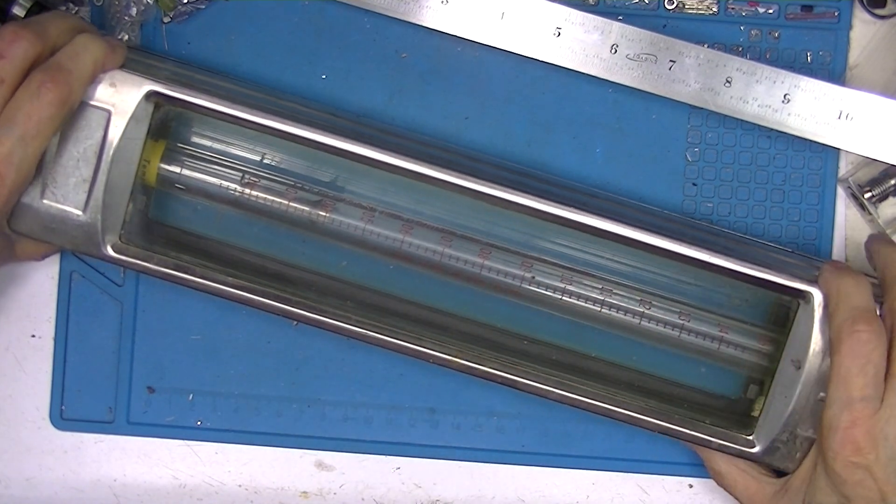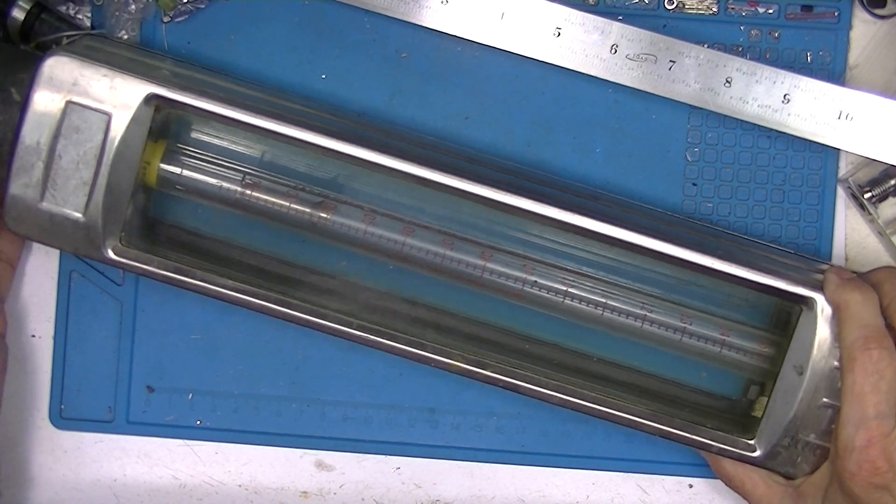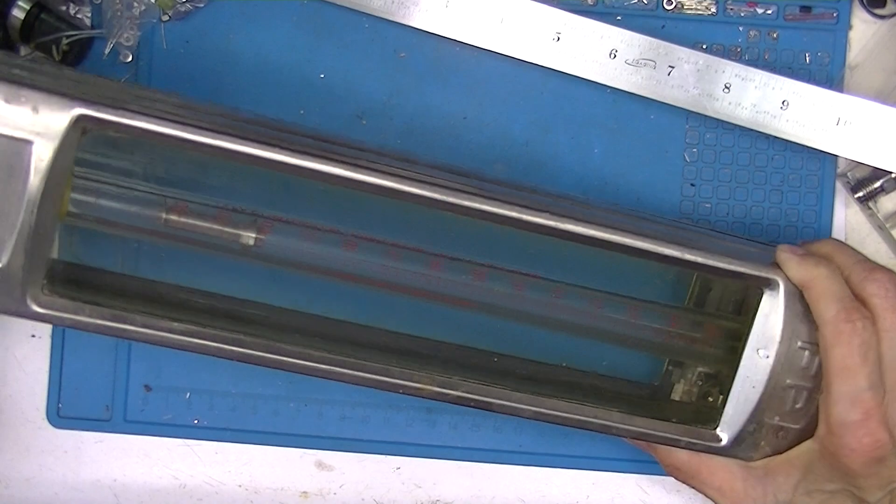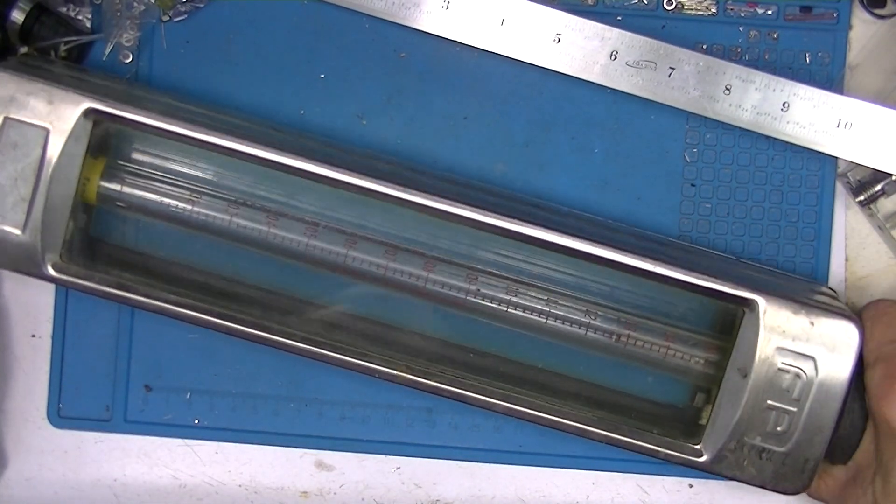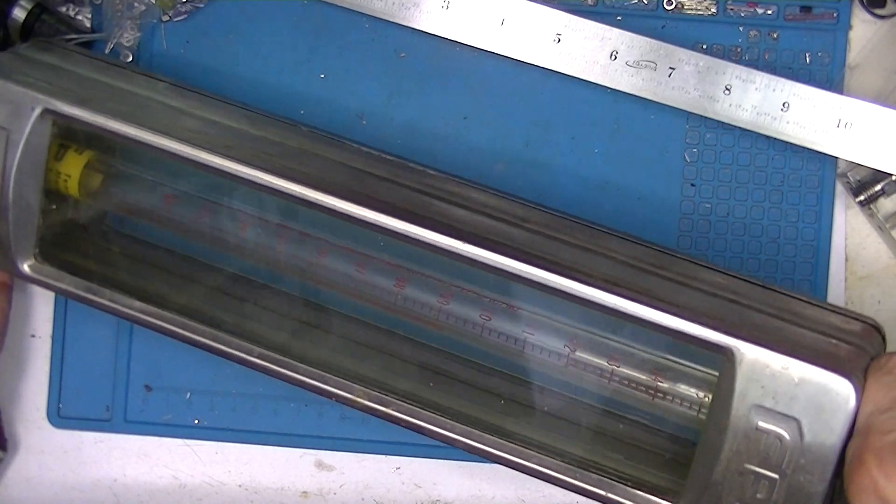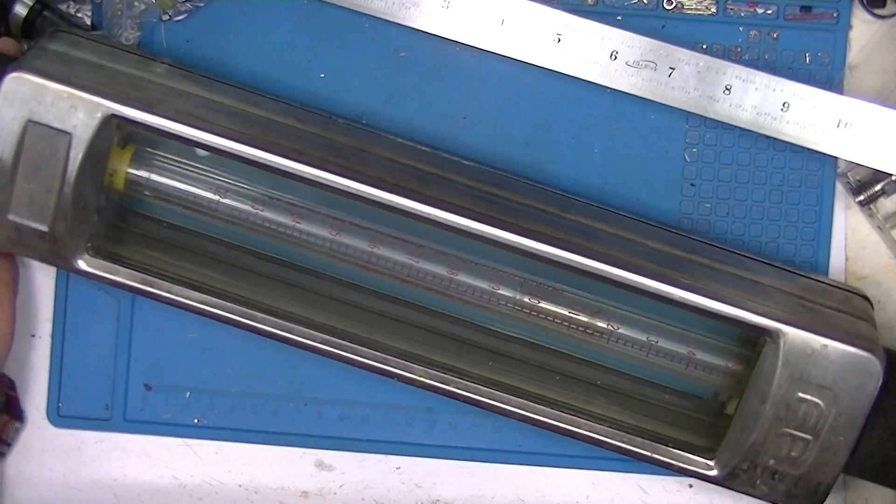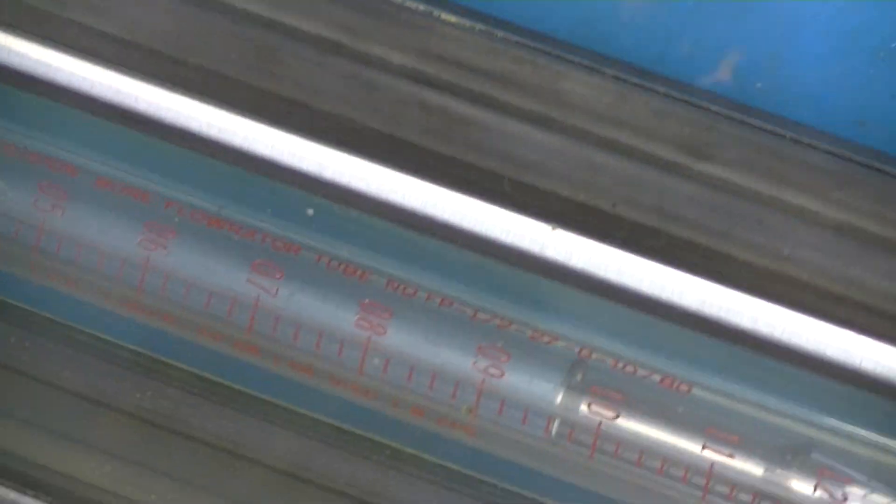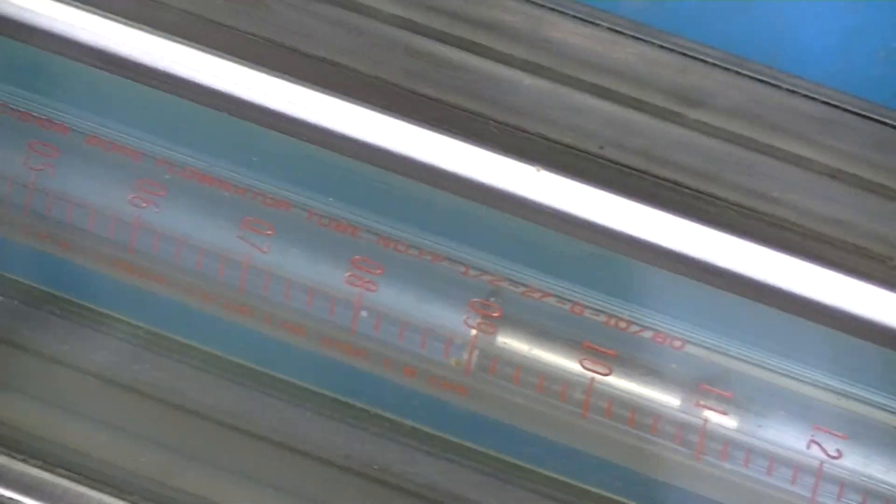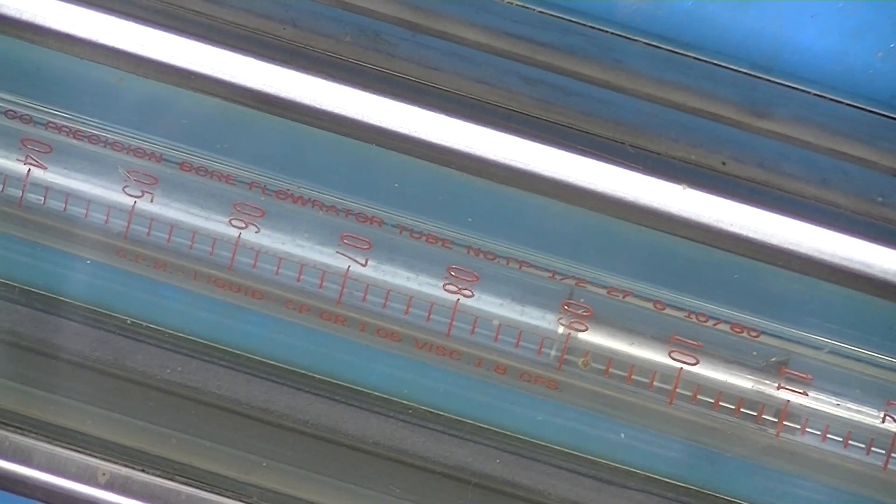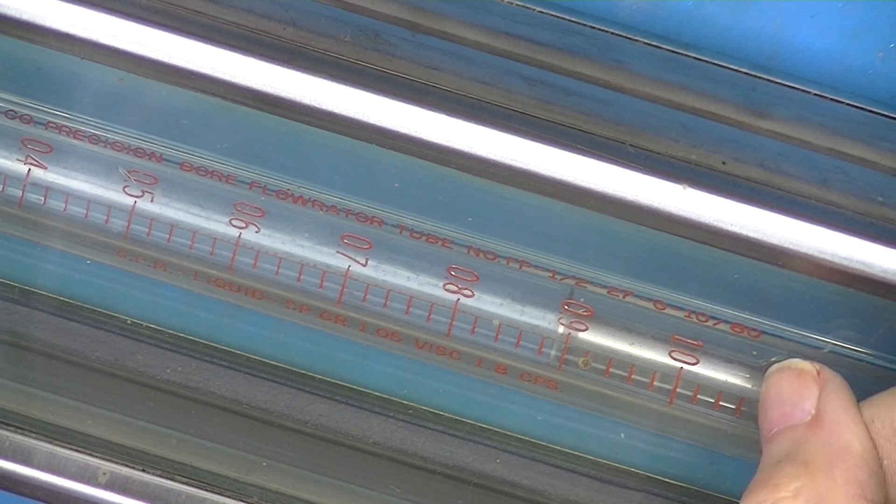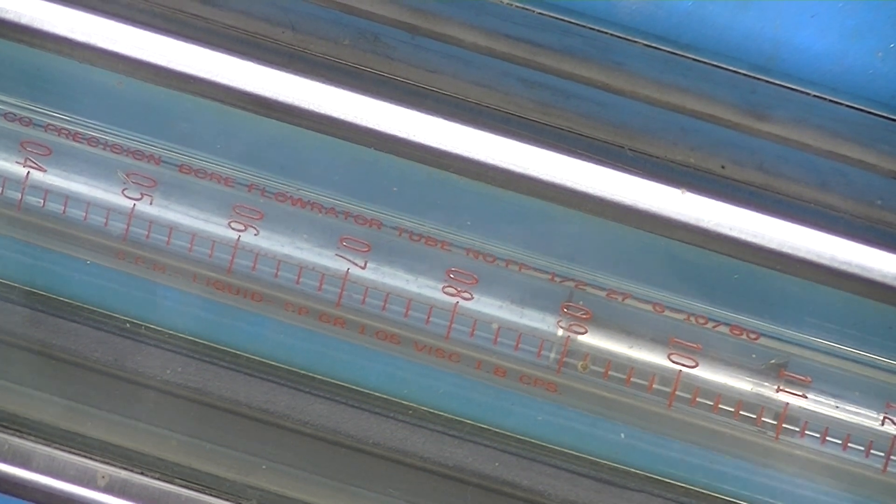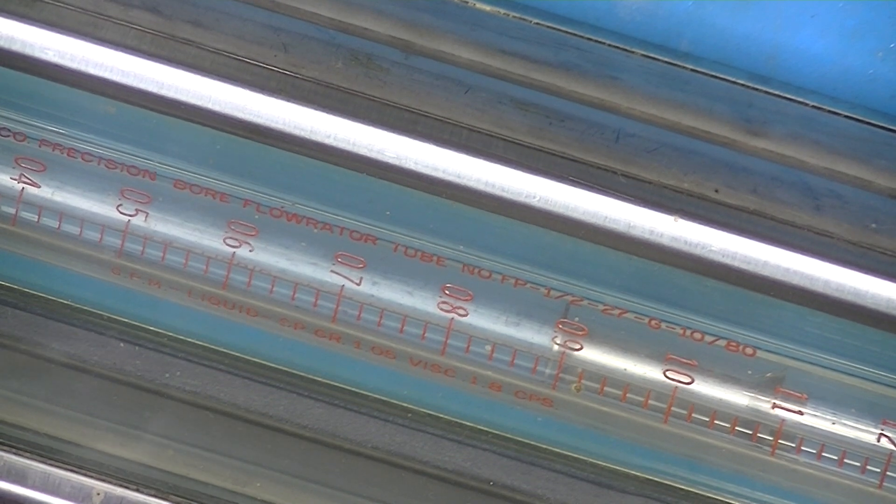The float, if you call it a float, the indicator is actually tubular and it's stainless steel. I'm going to get a close-up of it here. The float has some flanges on it and you read it at the top flange. This is also a Fisher and Porter unit.